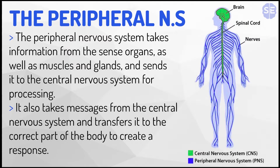So for example, let's say you take it from a muscle in the arm — it sends information to the spinal cord and gets sent to the brain so it can be processed. And then the brain takes the message and transfers it to the correct part of the body to create a response. So the brain might send a message to the other arm and create a response here to move it.